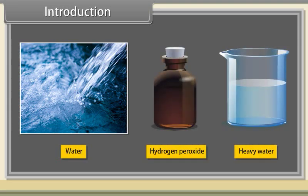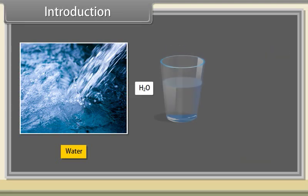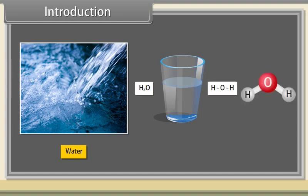Water is a chemical substance with the chemical formula H2O. It is a colorless and transparent liquid.